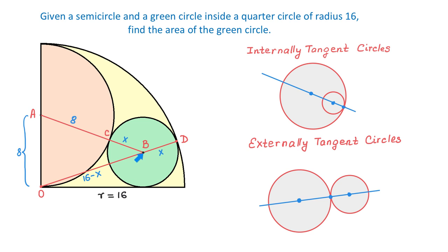From the center of the green circle, we will draw a perpendicular to AO, and this point of intersection will be point E. Then EO will be equal to x, because this is the same as the radius of the green circle. If AO is 8 units and EO is x units, then AE will be 8 minus x. In this figure, we have two right triangles formed: one is AEB, and the other one is OEB.